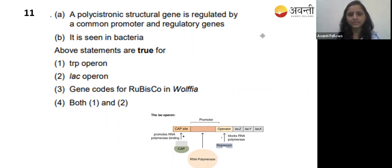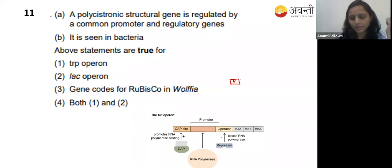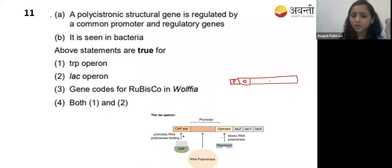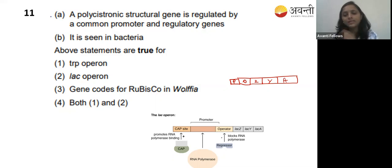Eleventh question: polycystronic structural genes are regulated by common promoter and regulatory gene. Polycystronic genes are only seen in bacteria, not eukaryotes. In polycystronic genes, a single promoter and single operator control more than one gene - as seen in the lac operon, where lac Z, lac Y, and lac A genes are controlled by a single promoter.